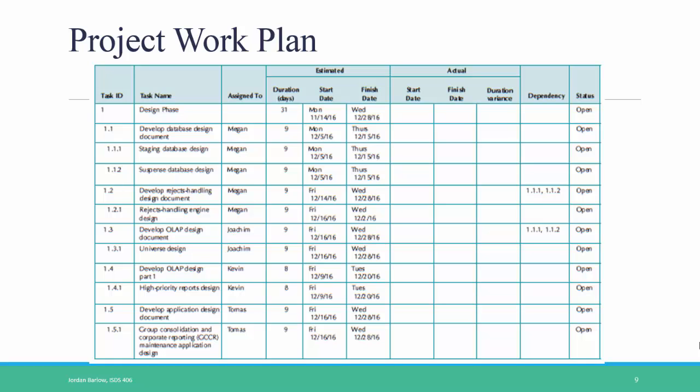This is a nice example of how to format a project work plan, but don't follow it too closely when completing the homework. First, this project work plan only shows the design phase — you'll also want to include planning, analysis, and implementation steps. Second, because you haven't arrived at the design phase yet, you don't know as many specific design details as are shown here — for example, you don't know what type of database you'll be using. Finally, most project work plans have many more dependencies than are shown here.